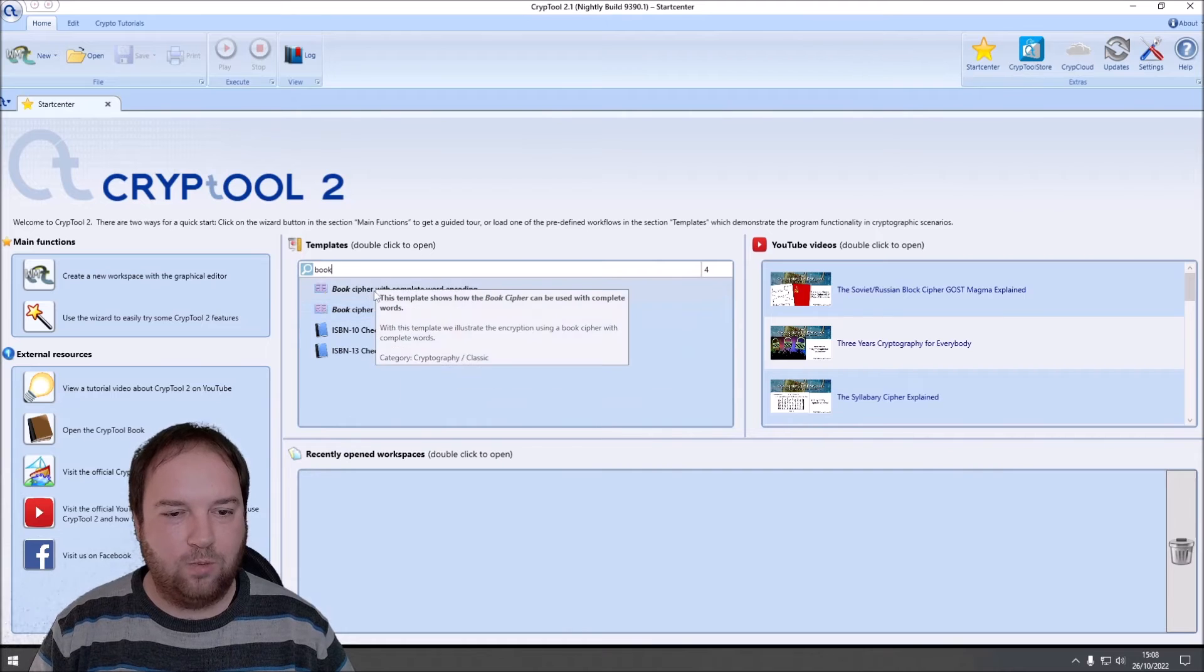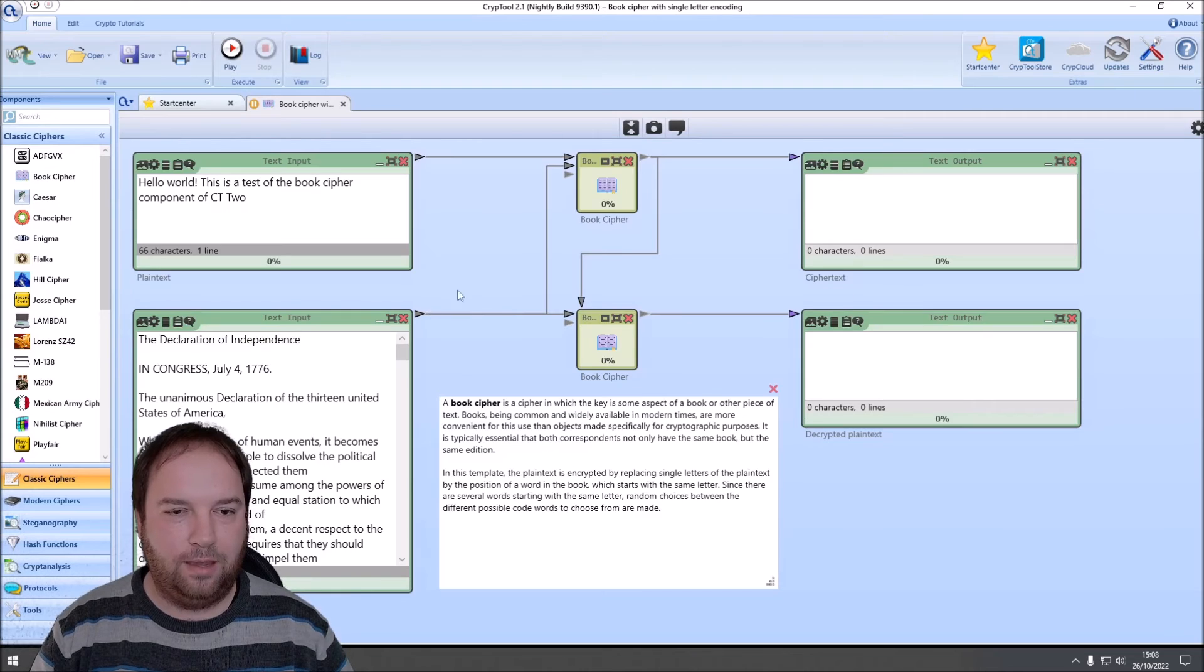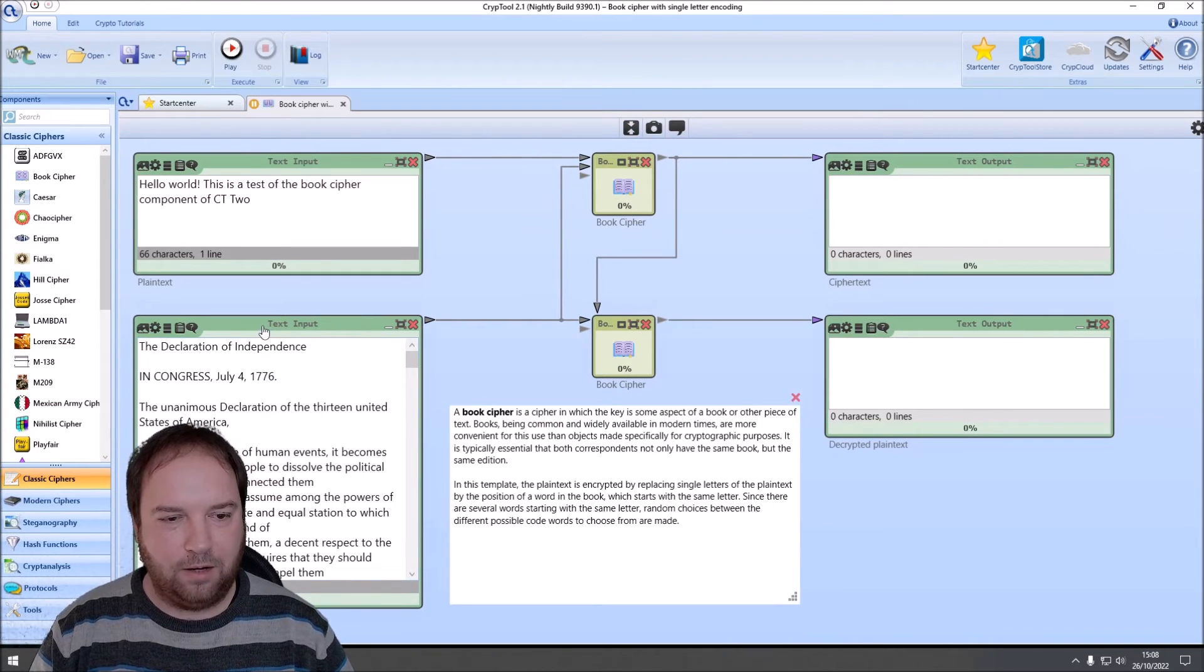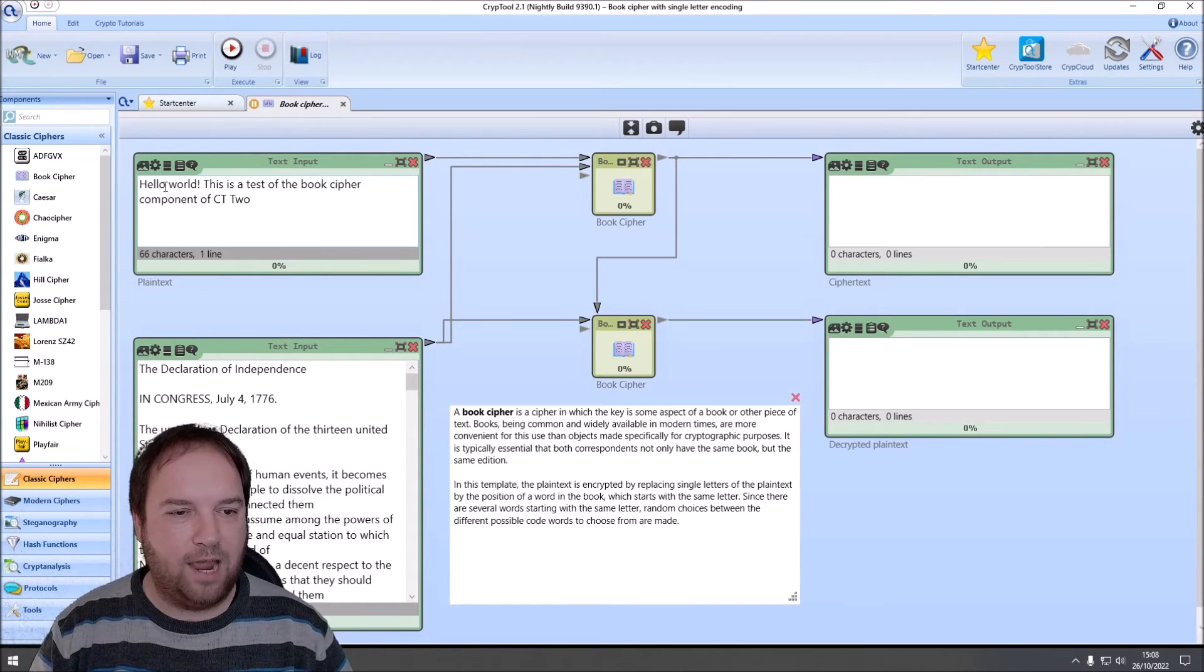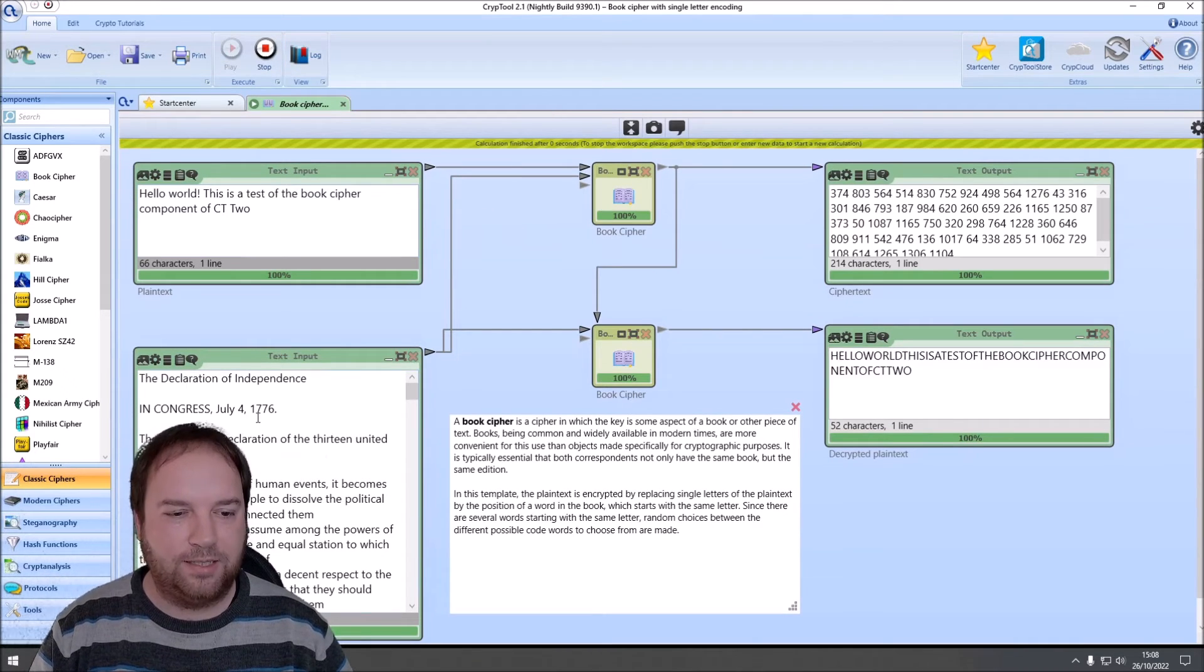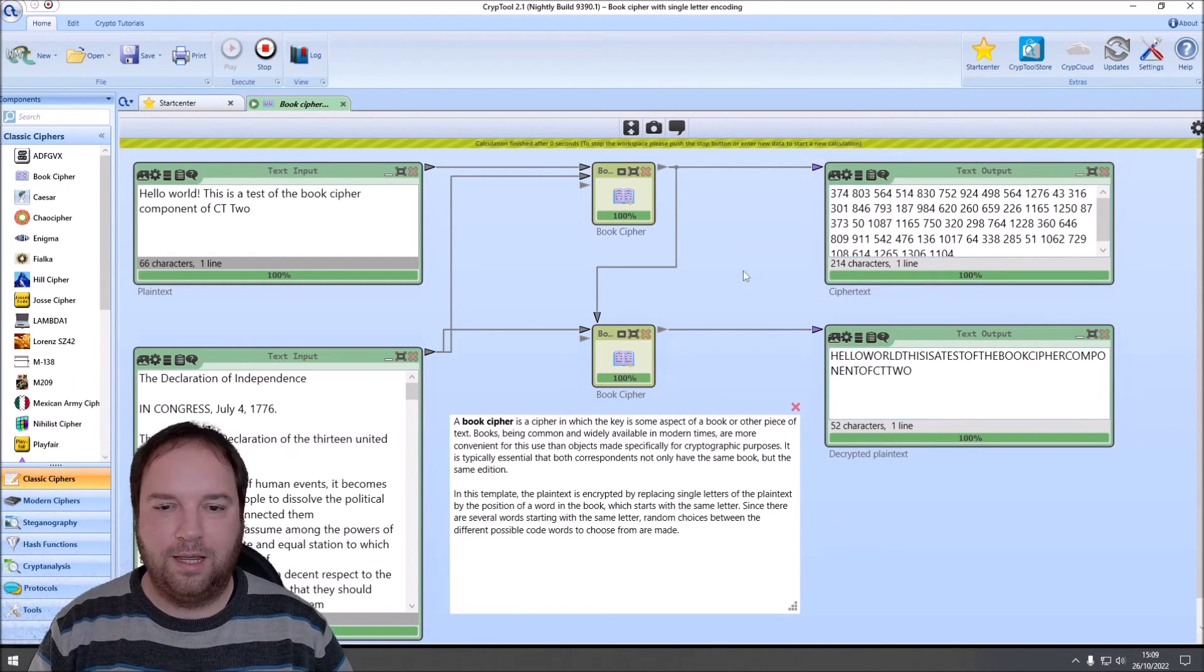What can we see here? Our key here is the Declaration of Independence of the United States. Then here on the top, we have our plaintext: hello world, this is a test of the book cipher component of CT2. We have two book cipher components, one for encryption, one for decryption. Then cipher text text output and a decrypted plaintext text output. So what happens when I press play? Our text here is encrypted using the Declaration of Independence. So the component writes the word numbers or word offsets, which then are used for the letters. For instance, here we have the H and the 374th word obviously starts with an H. Then we have the E, L, L and so on. And in the decryption process with the second book cipher component, this process is reversed. We have hello world, this is a test and so on.